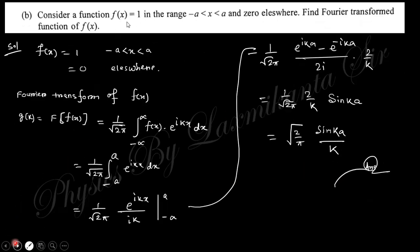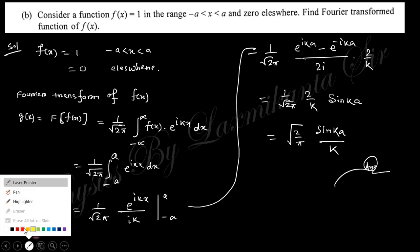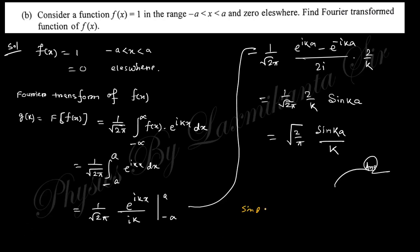Next question: consider the function f(x) = 1 in the range −a to +a and 0 elsewhere. Find the Fourier transform of f(x). So g(k) = (1/√2π) ∫₋∞^∞ f(x) e^(ikx) dx, which reduces to (1/√2π) ∫₋ₐ^a e^(ikx) dx since f(x) = 1 within that limit and 0 elsewhere. Integrating and substituting upper and lower limits, you obtain g(k) = √(2/π) · sin(ka)/k, using the formula sin θ = (e^(iθ) − e^(−iθ)) / 2i.